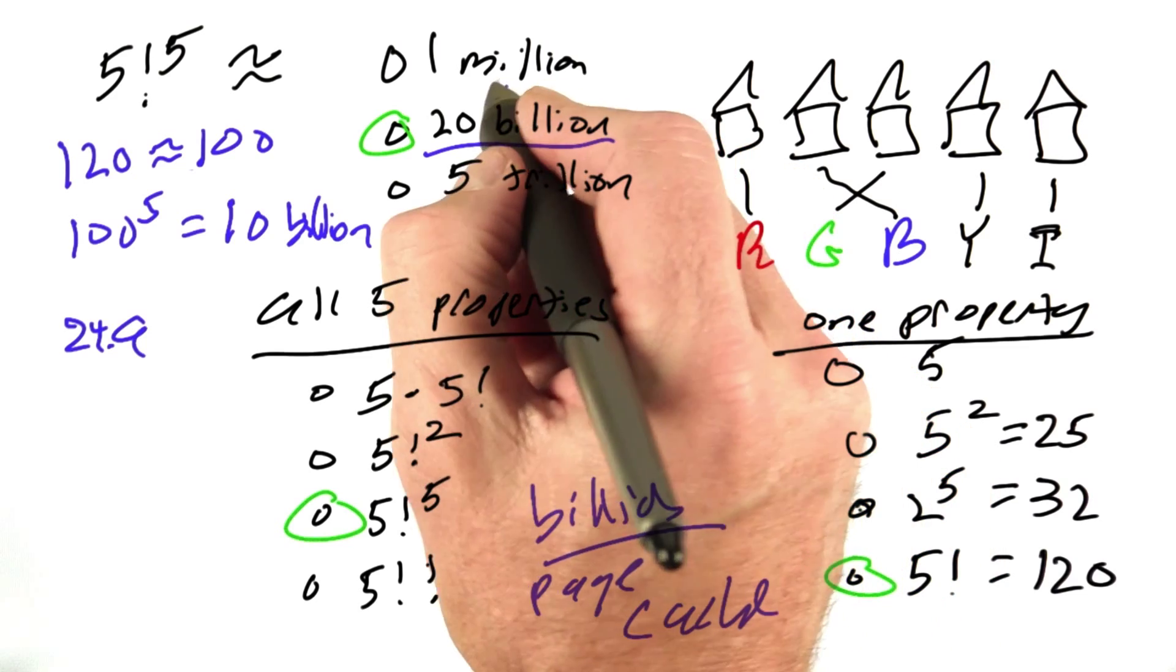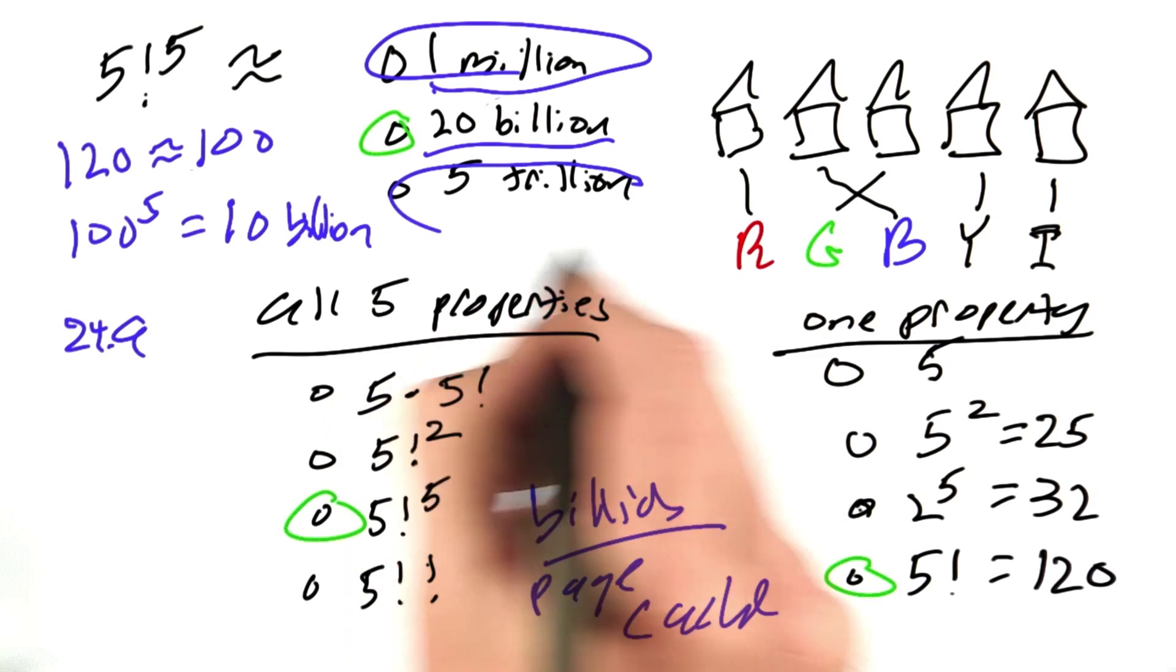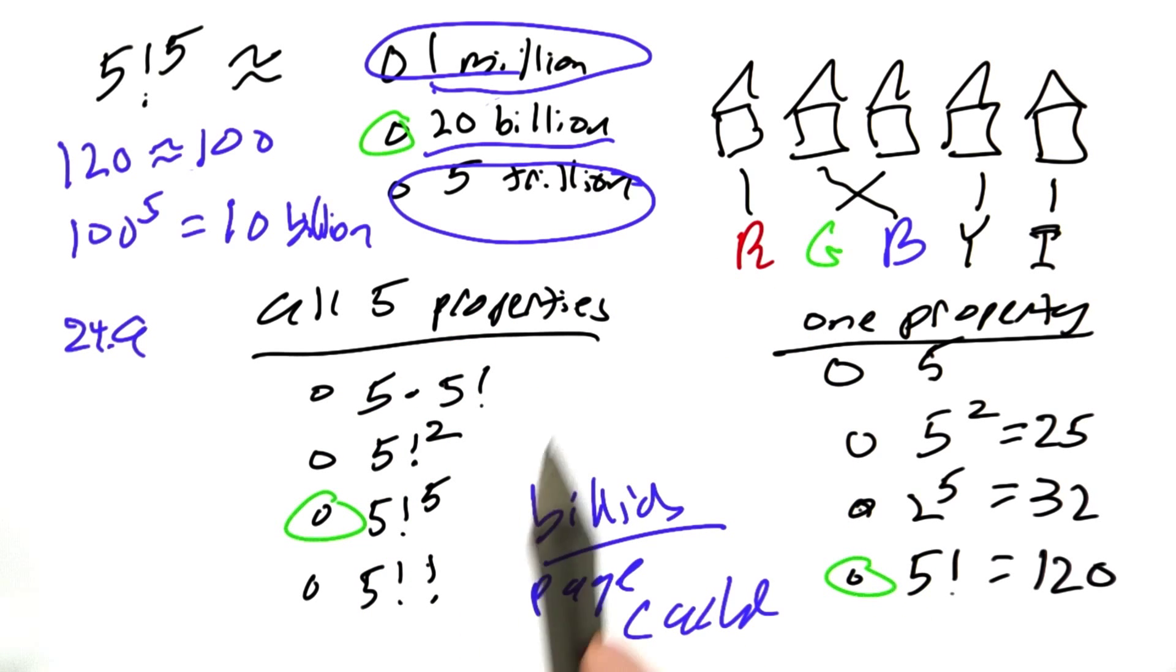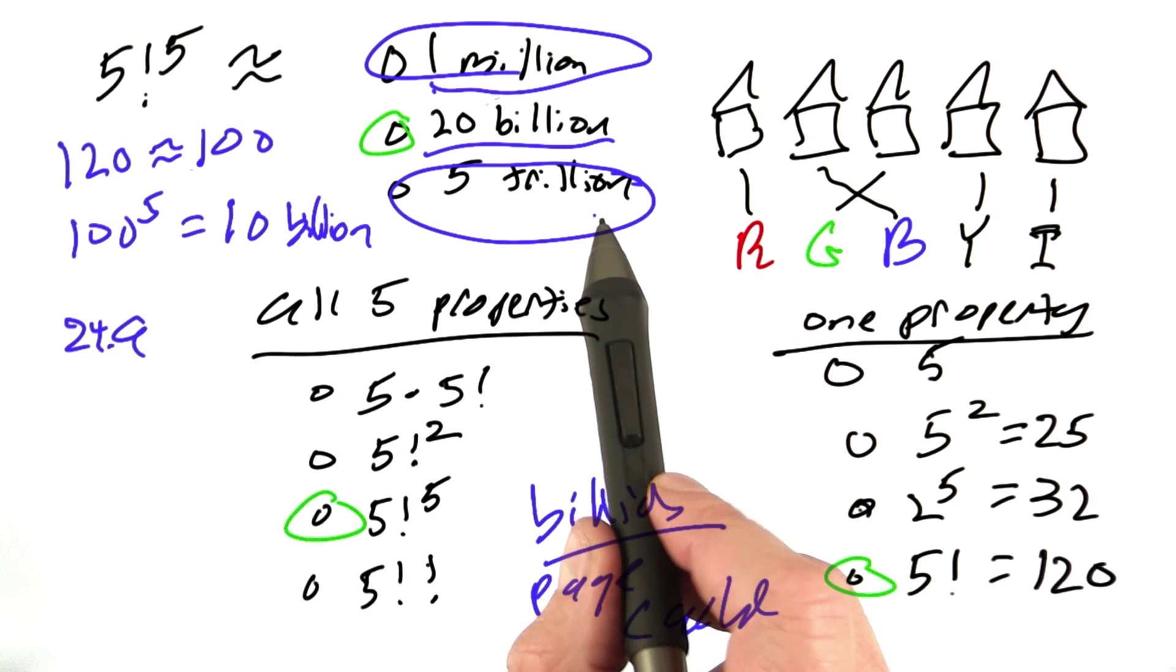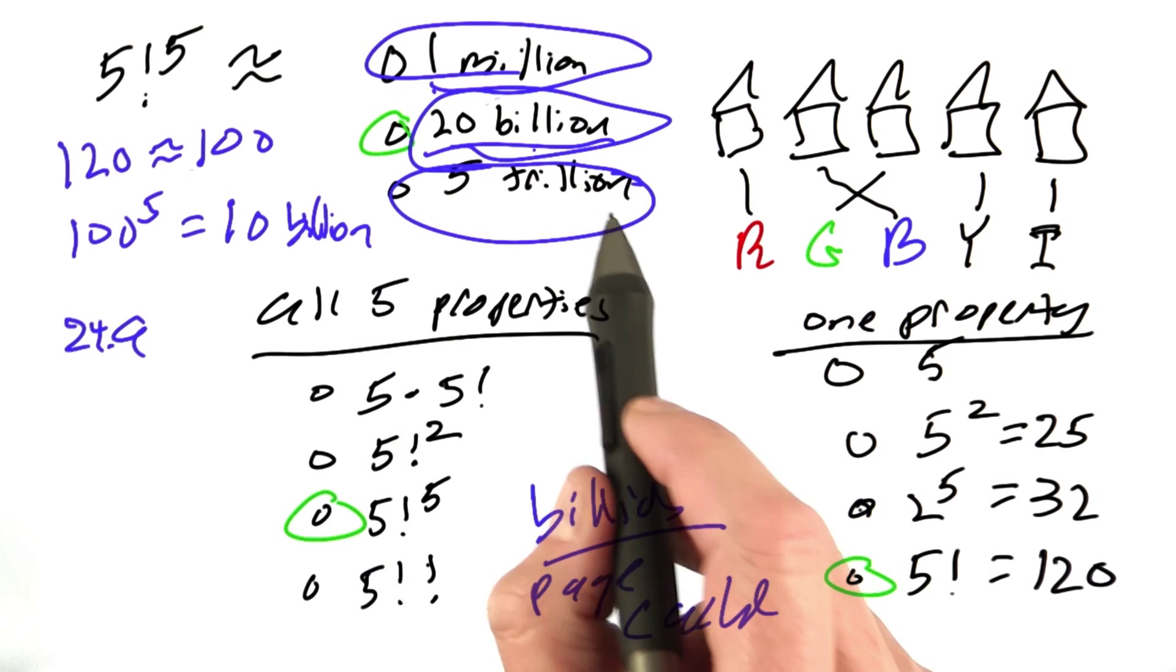If the answer had turned out to be in the millions, we could say, oh great, we're done. If it had turned out to be in the trillions, we could say it's totally infeasible. We need a better solution, but if it's somewhere in the middle with the billions, then we're not quite sure.